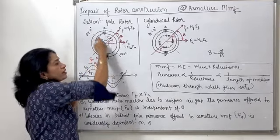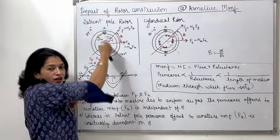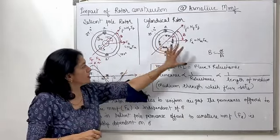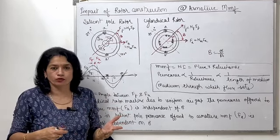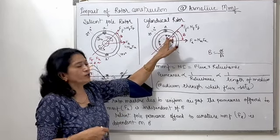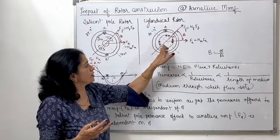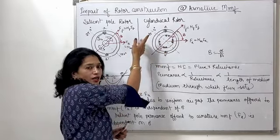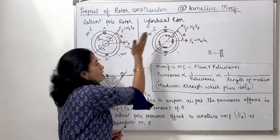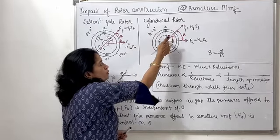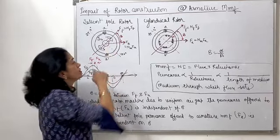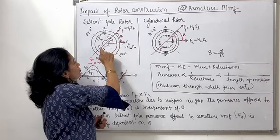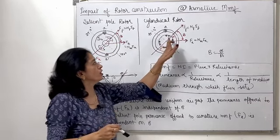Along the interpolar axis or quadrature axis, the air gap is maximum. For the cylindrical rotor, I am taking a two-pole synchronous machine — one north pole and one south pole — with distributed DC field winding wrapped around it. The flow of current creates a north pole on one side and a south pole on the other.